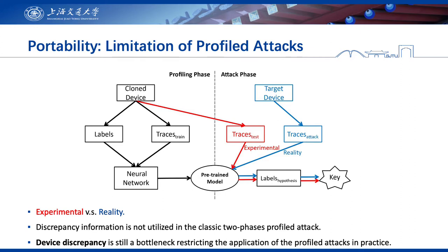However, profiled attacks have a major limitation called portability, which is often neglected in research papers. The portability issue occurs when there is a gap between experimental settings and reality. For example, in experiments we usually use a single device for profiling and then use the same device for the attack, but in reality no two chips are exactly the same. Even for devices of the same type, the leakage of the side-channel information is inevitably different, which is likely due to random process variations introduced during fabrication and packaging. Unfortunately, this discrepancy information is not utilized in classic two-phase profiled attacks. As a result, attacking a different device may cause a successful single-device model to completely fail.